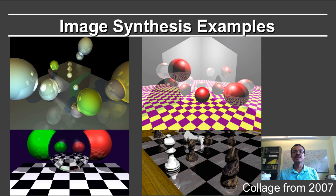Let me give you a hint of the kinds of things you'll be able to do in this course. This is a collage of some of the images produced by the ray tracer when I taught this course five years ago. You can see the nice reflections and refractions through the glass spheres, the way the chess pieces cast their reflections on the chess boards — and you can do all of this by the end of the course.